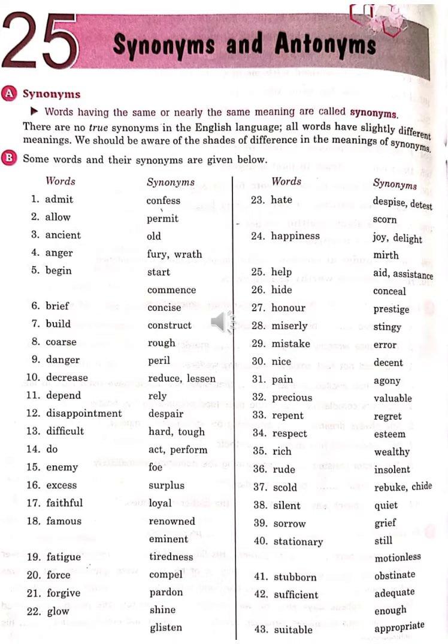Precious – Valuable (Anmol, Keemti). Repent – Regret. Respect – Esteem. Rich – Wealthy (Ameer). Rude – Insolent (Asabhya). Scold – Rebuke (Daatna). Silent – Quiet (Shant). Sorrow – Grief (Dukh). Stationary – Still, Motionless (Shant, Bilkul Shant).